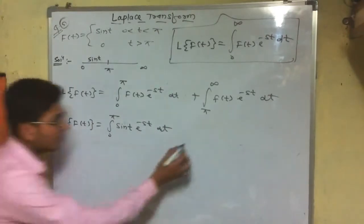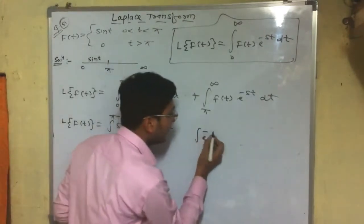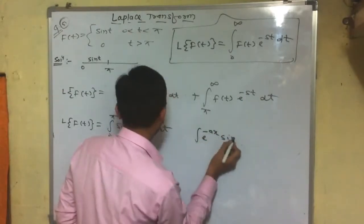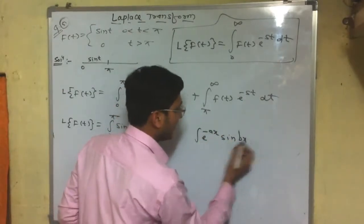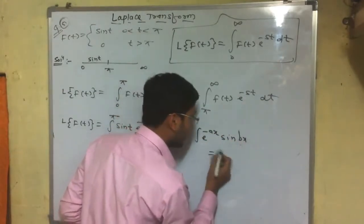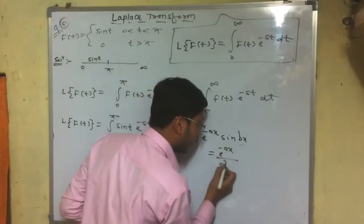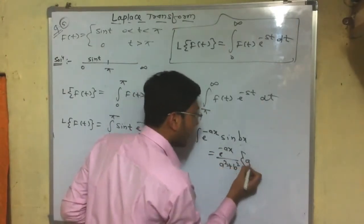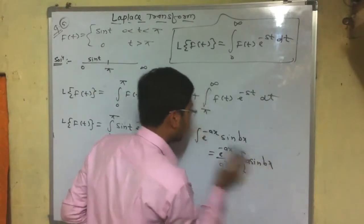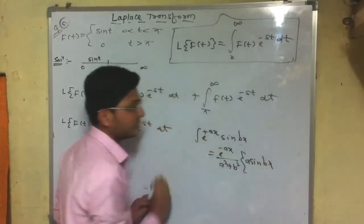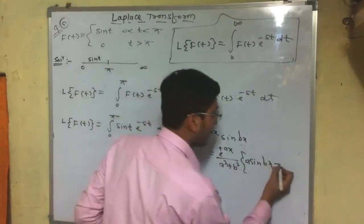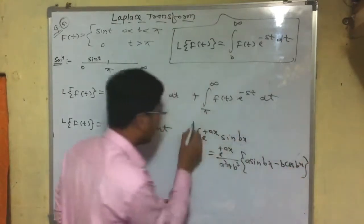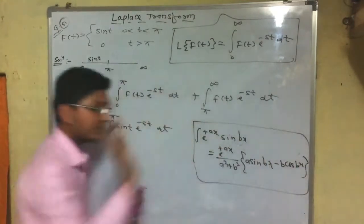We know that the integral of e to the power minus ax times sin(bx) equals e to the power minus ax divided by (a² + b²), multiplied by the quantity [−a sin(bx) + b cos(bx)]... wait, let me restate: it equals e to the power minus ax over (a² + b²) times [a sin(bx) minus b cos(bx)]. This is the formula I mentioned in previous classes.